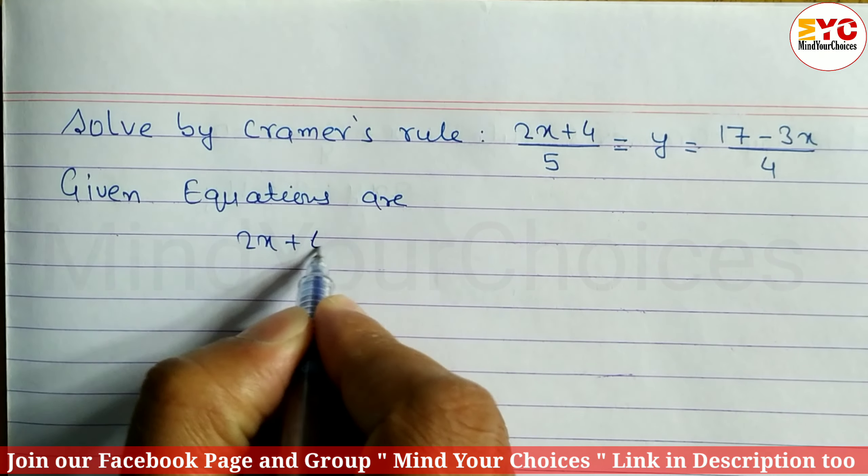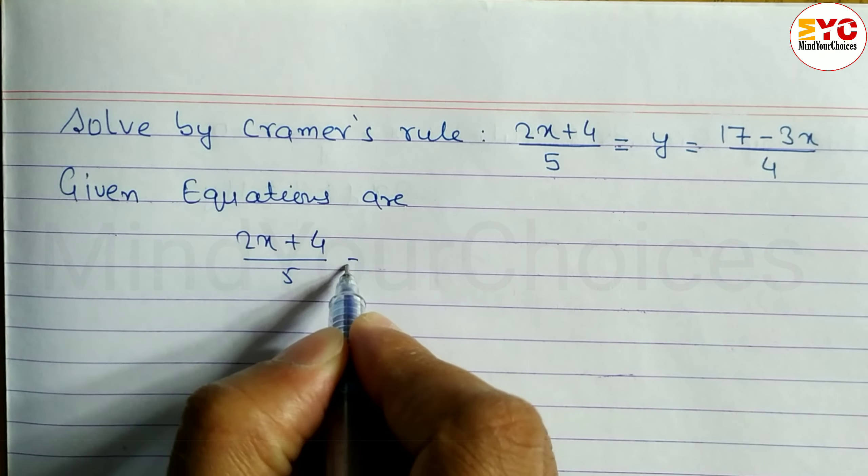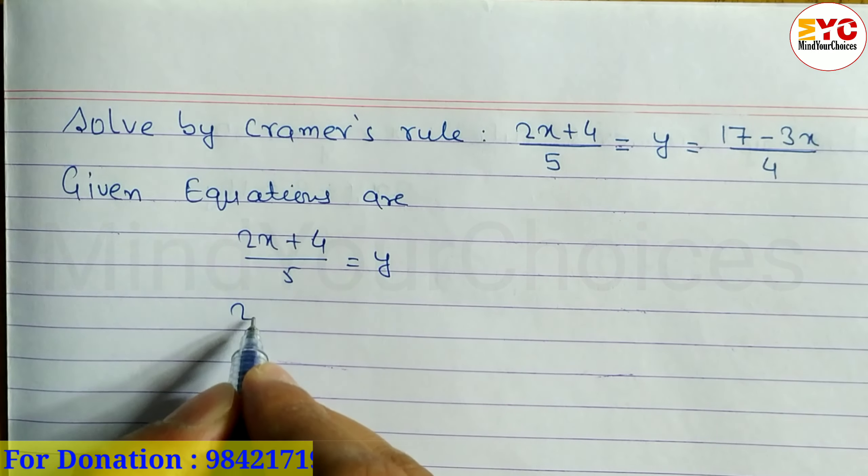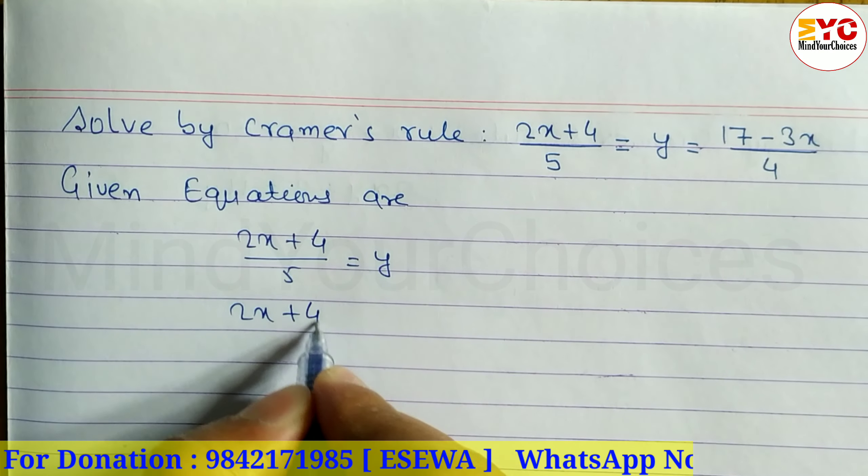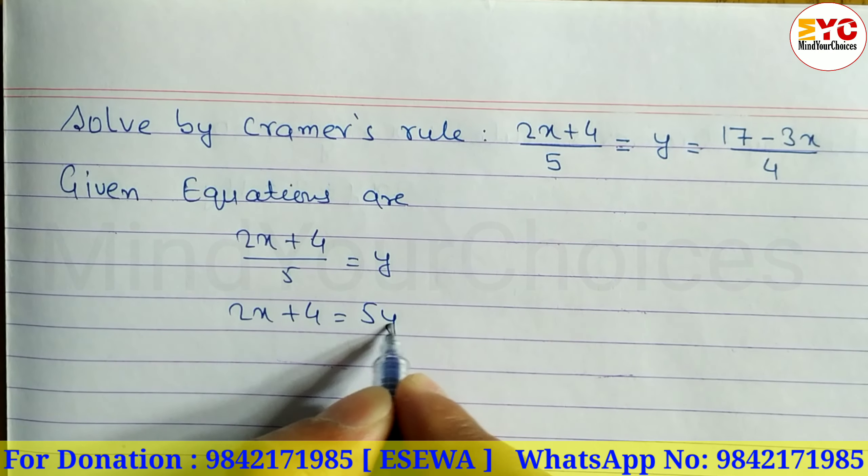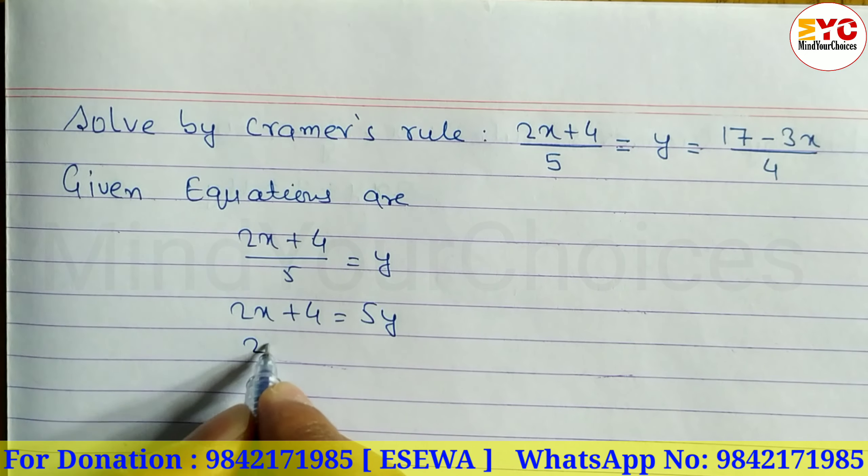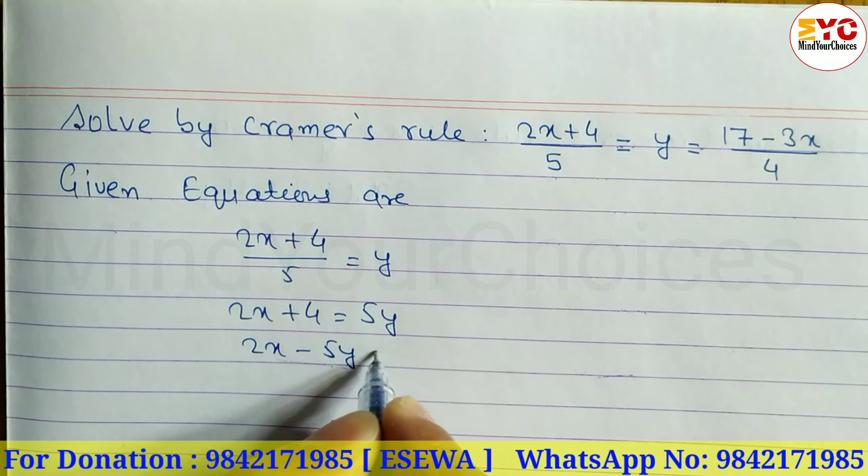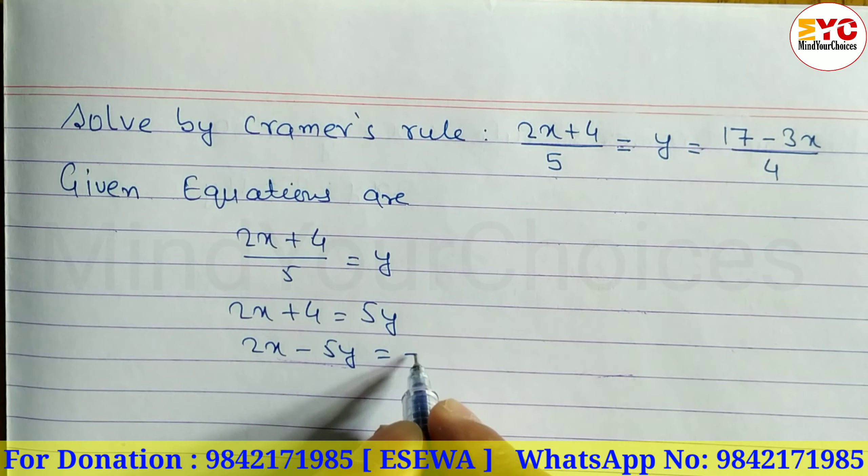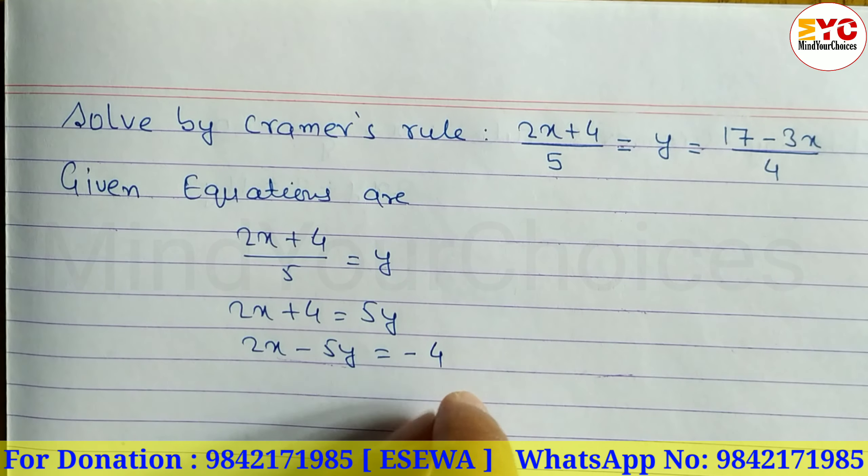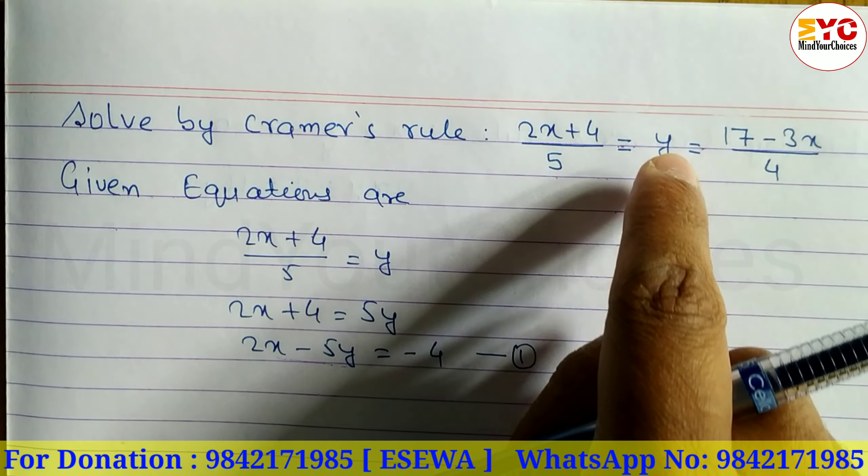2x plus 4 divided by 5 is equal to y. Cross multiply: 2x plus 4 is equal to 5y. Moving 5y to the left, we get 2x minus 5y is equal to negative 4. The constant number goes on the right side. This is equation 1.